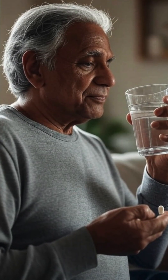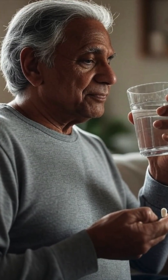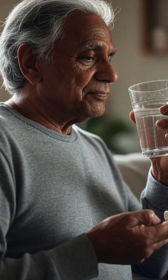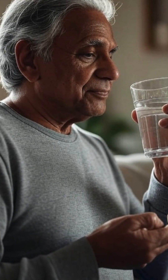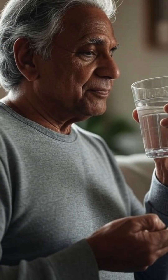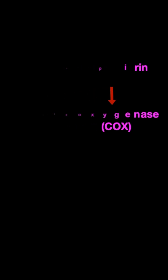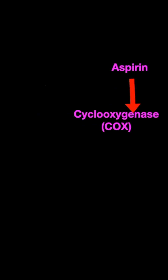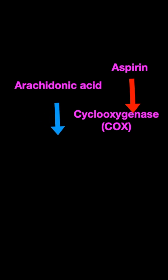Why aspirin is used for the prevention of stroke or myocardial infarction. Aspirin is a cyclooxygenase (COX) inhibitor. This cyclooxygenase enzyme acts on arachidonic acid.